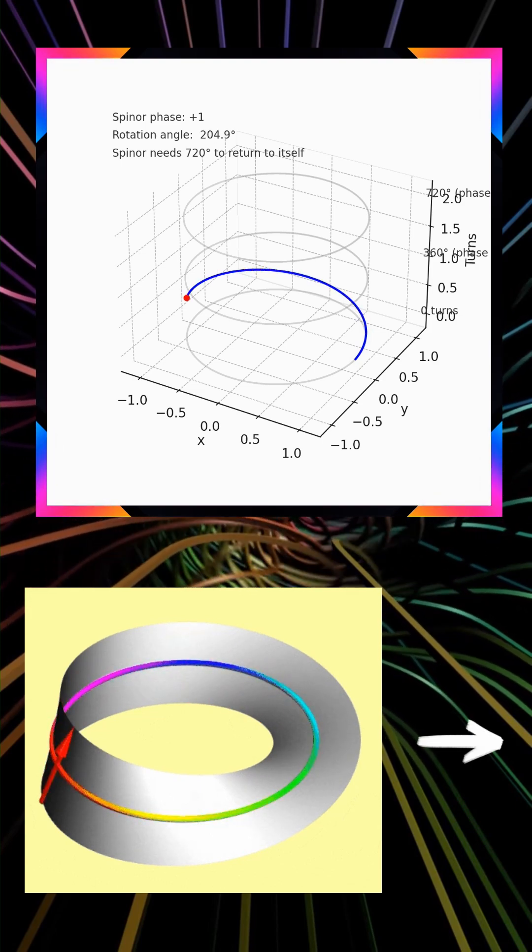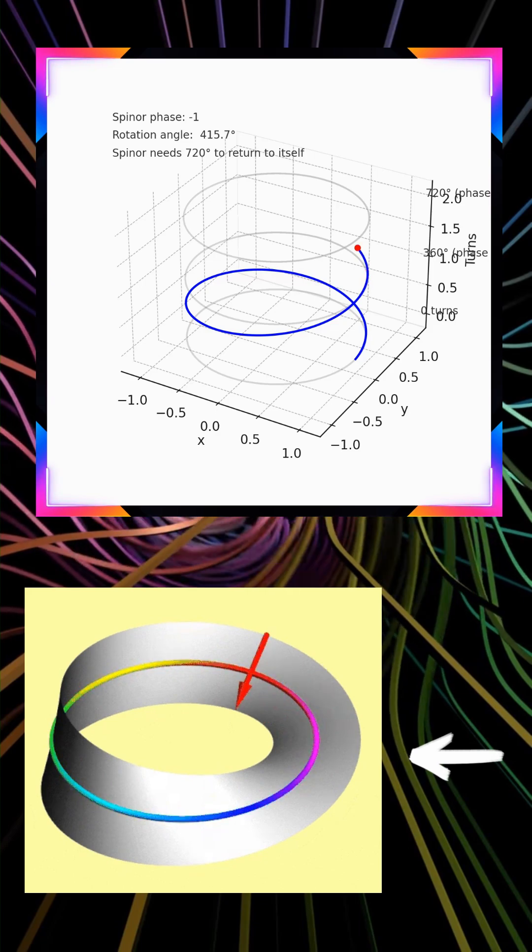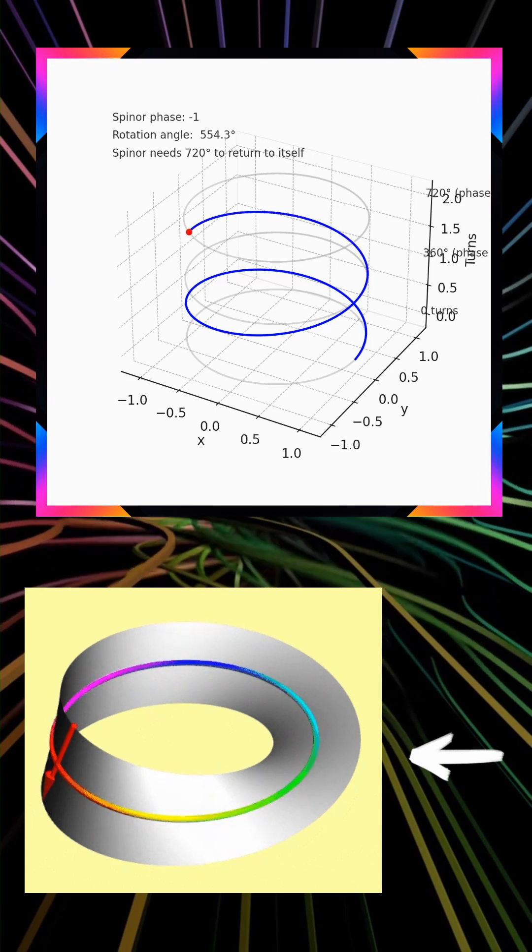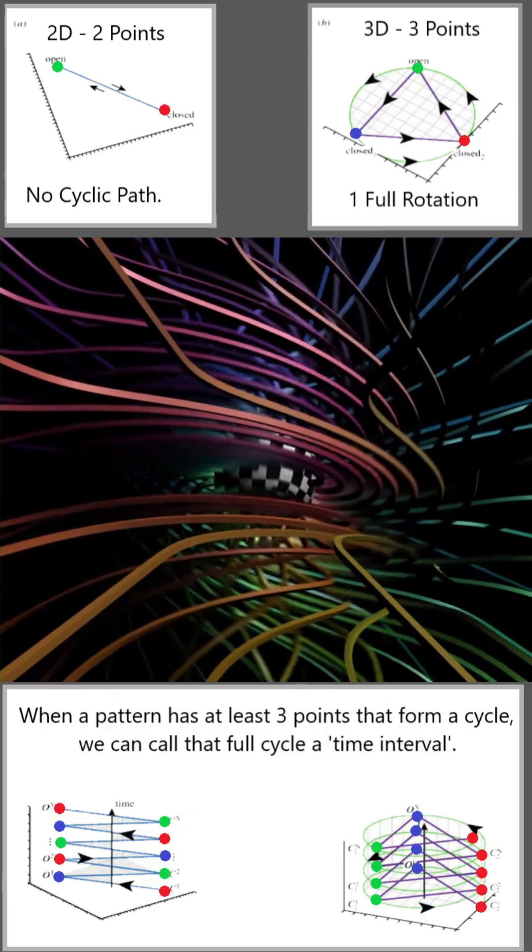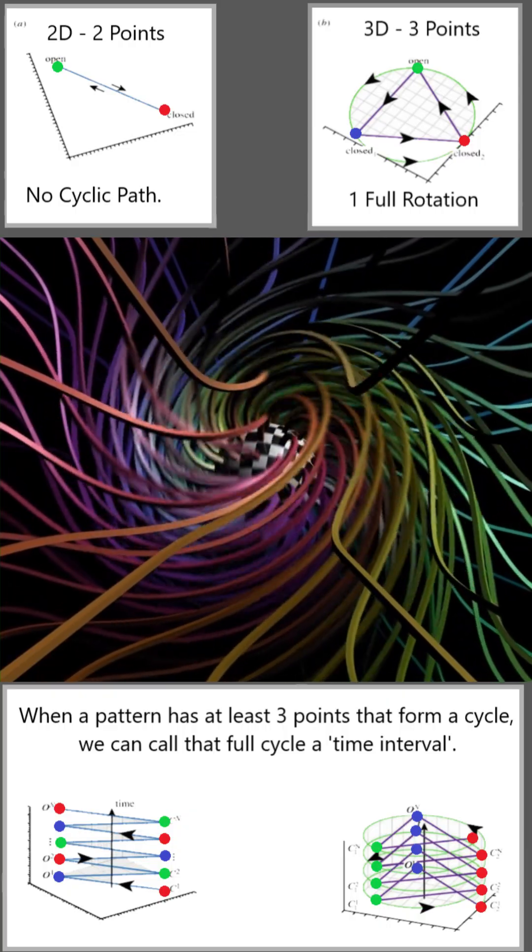This unusual behavior makes spinors the natural language of quantum mechanics, where they represent the intrinsic spin of matter. In non-relativistic physics, we use two-component Pauli spinors to describe electron spin.